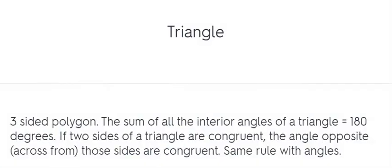Triangle. Three-sided polygon. The sum of all the interior angles of a triangle equals 180 degrees. If two sides of a triangle are congruent, the angles opposite those sides are congruent. Same rule with angles.